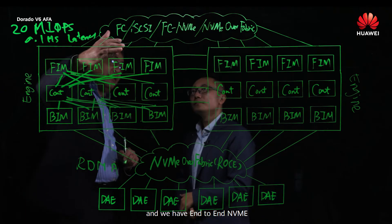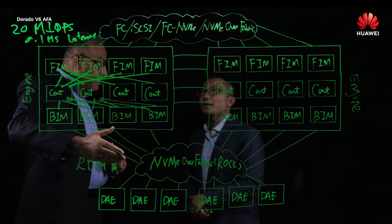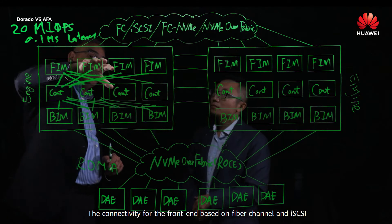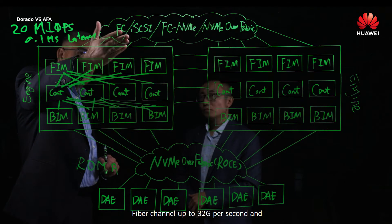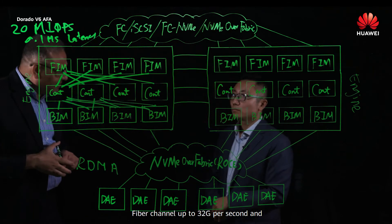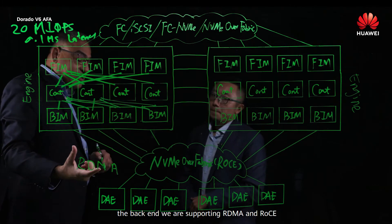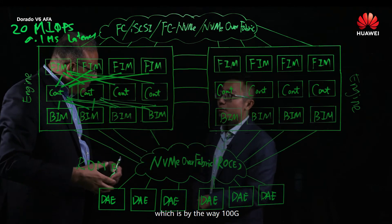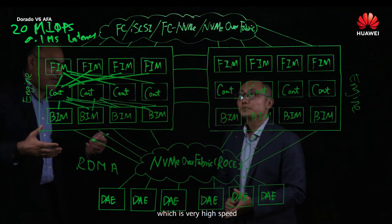We also have end-to-end NVMe. The front-end connectivity is based on Fibre Channel up to 32 gigabits per second. On the back-end, we support RDMA and RoCE, which is 100G — very high speed.